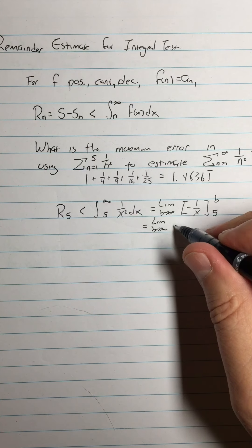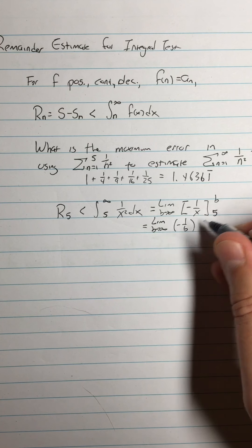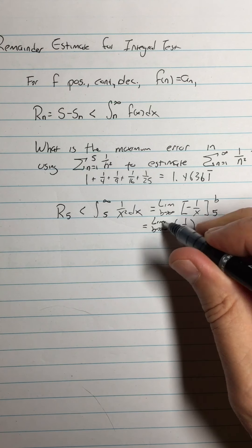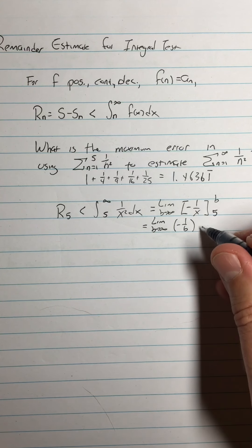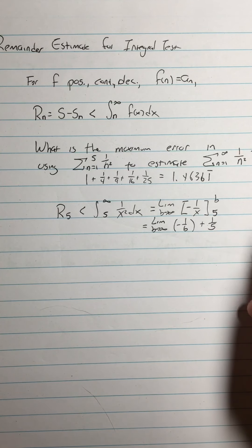So then that's going to equal the limit as b approaches infinity of - so when I plug in the b, I'm going to get negative 1 over b. And when I plug in the 5, I'm not going to need the limit because my expression will not depend on b.